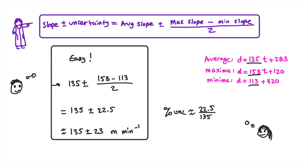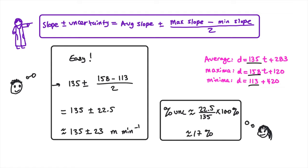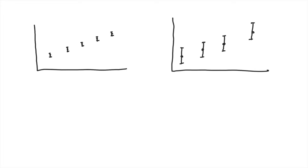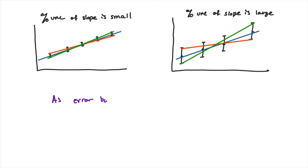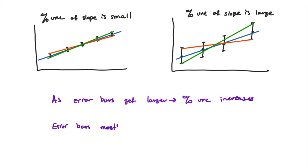Negda calculated the percentage uncertainty to be 17%. The group found it interesting that the percentage error had propagated through the graphing technique and that the error for position was less significant compared to the speed. Mr. S explained that this corresponds to random errors — as error bars get bigger, the difference between the maximum and minimum slopes also increases. Only use this technique to explore uncertainties related to the slope of a graph when the slope is meaningful.